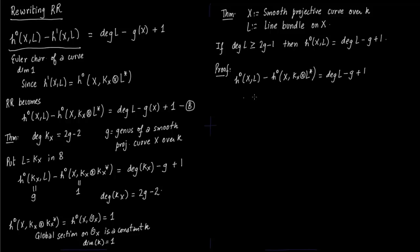So first we copy down the Riemann-Roch. This is formula B. So essentially what we want to do is we want to show this second term on the left hand side, this term is 0. So if we show this is 0, we are done.